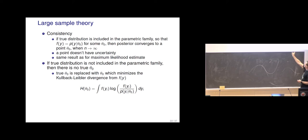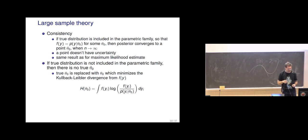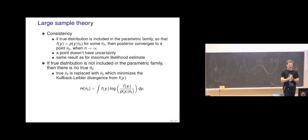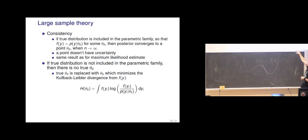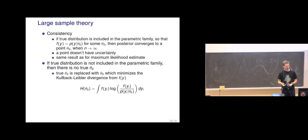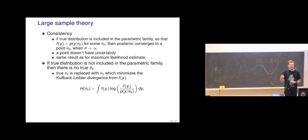The Kullback-Leibler divergence here is specifically between the true distribution and our model for the observations. When we have infinite data the posterior is a point, and the predictive distribution P(y_i) is then the closest possible to the true distribution. So that's a nice feature, and it's very much about how well we can choose the parametric family to make this a still-useful distribution.